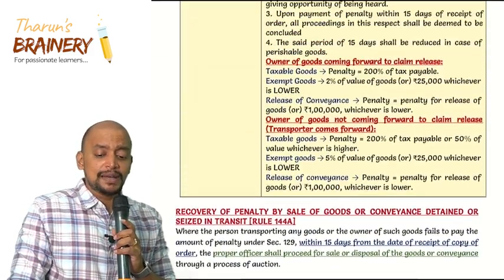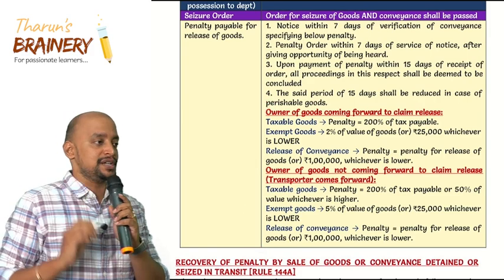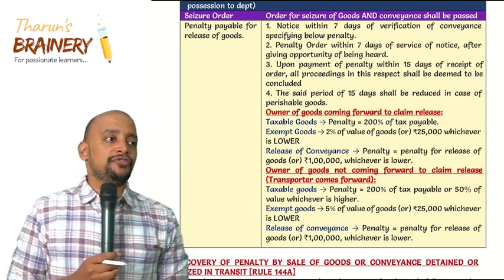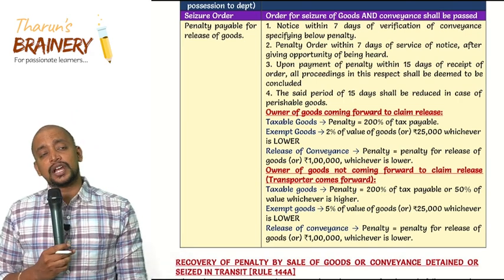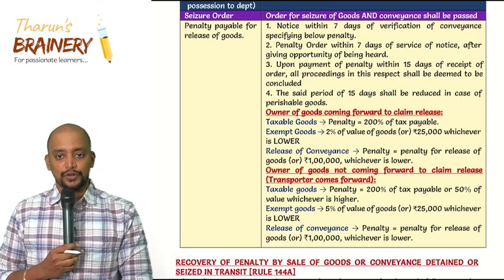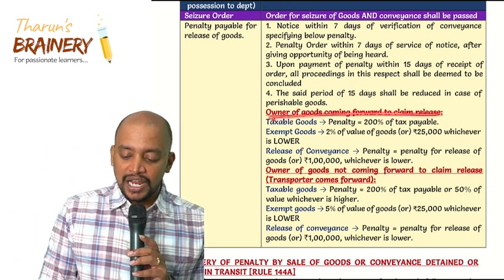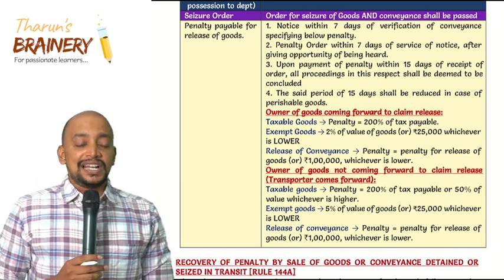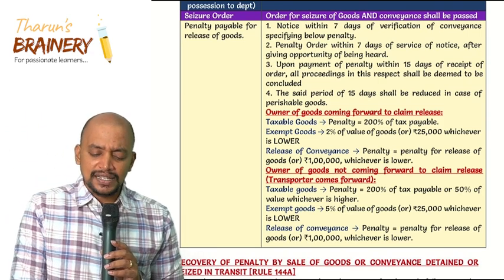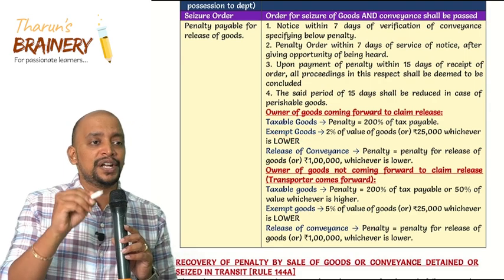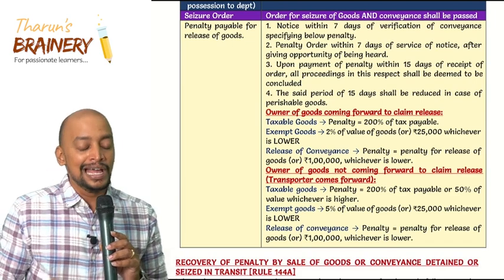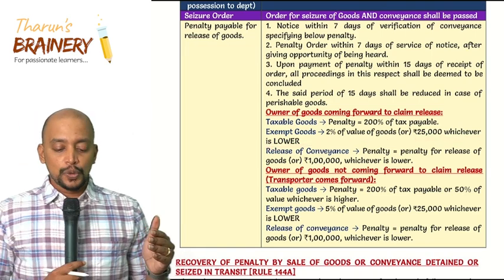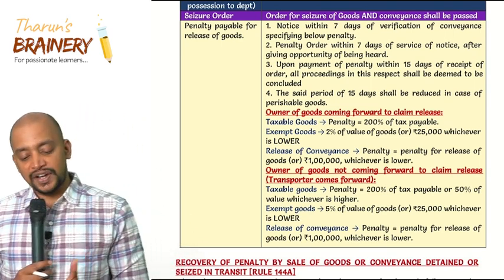How much is the penalty payable? This can be tested in exams. First, check whether the owner is coming forward to pay the penalty or not. If the owner of the goods is coming forward to claim release — for taxable goods, the penalty will be 200% of the tax payable. If it is exempted goods — exempted goods should also be transported with a valid document such as a bill of supply — the penalty will be 2% of the value of goods or ₹25,000, whichever is lower.